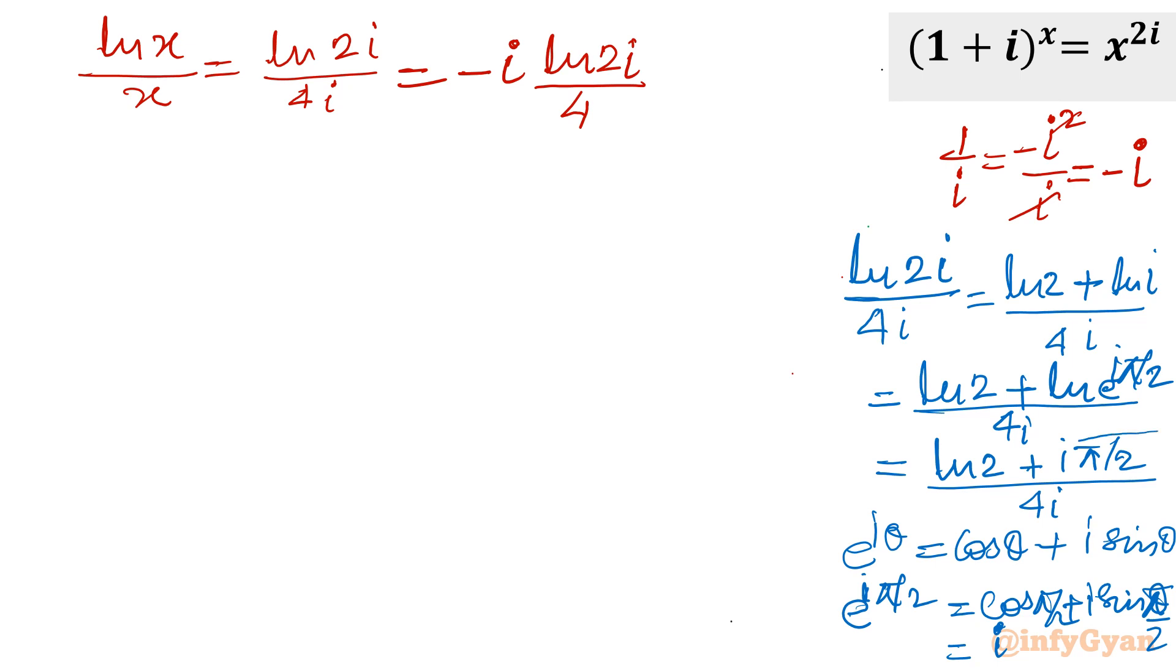Now you want to split, you can split from here. This is our simplified form of right-hand side. So what I am going to write, I will use the exponent property. I will write x as e raised to the power ln x. And that e raised to the power ln x, I will take in the numerator. So I will write e raised to the power minus ln x times ln x equal to minus i ln 2i over 4.